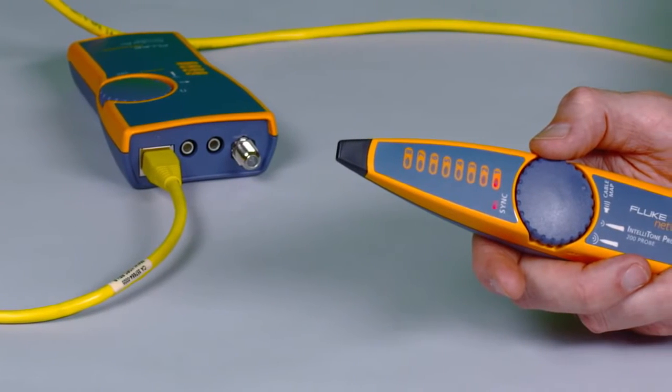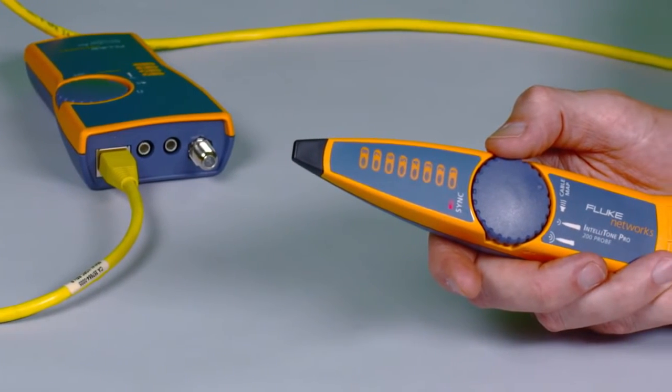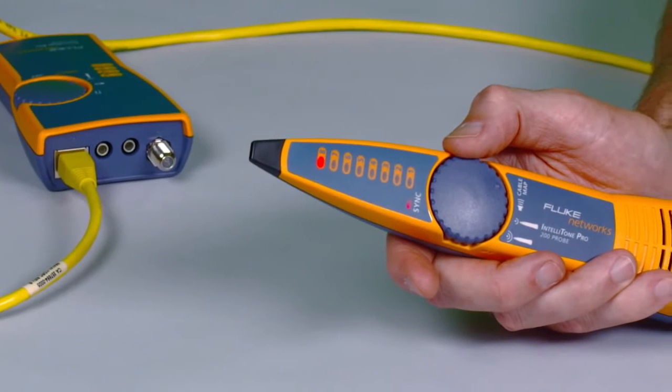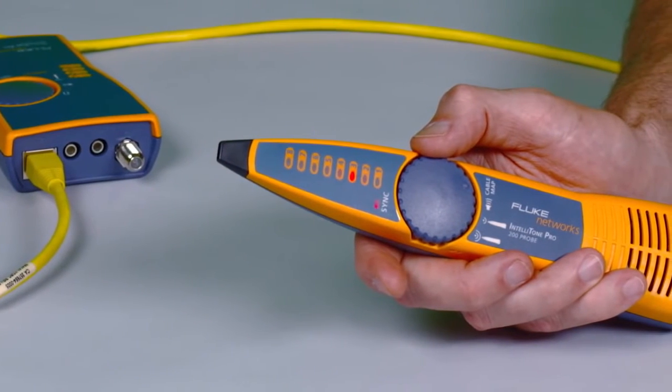Validate wire maps in a flash, finding the most common wiring faults on twisted pair cabling, such as shorts, opens, and crossed pairs.